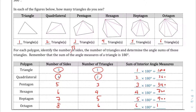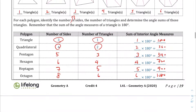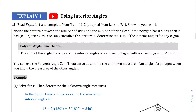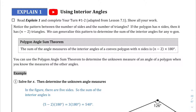An octagon has eight sides — cut into six triangles — so six times 180 is 1080 degrees. What you should notice is that from one polygon to the next, the sum is going up by 180 degrees each time. That's what they're going to be talking about in explain one.